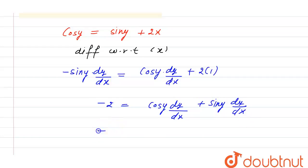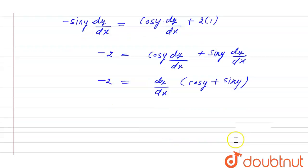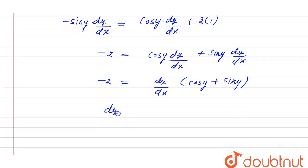Now we can take dy divided by dx common from it: dy divided by dx into cos of y plus sine of y. So the value of dy divided by dx is equal to minus of 2 divided by cos of y plus sine of y.